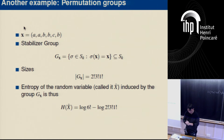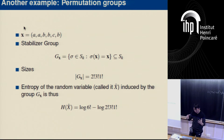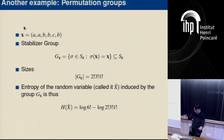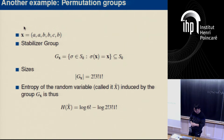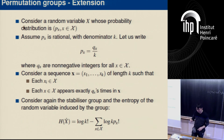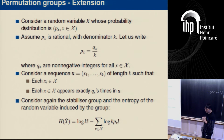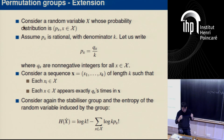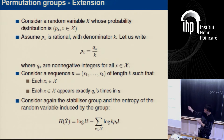Before the break, we showed an example of how to construct random variables from a group — specifically, using a permutation group. Now let's look at a more specific scenario. Let's say we are starting with a scalar discrete random variable with probability mass function px.